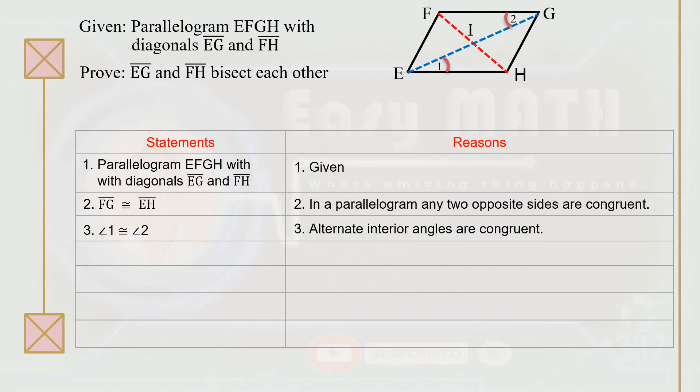Statement number four: angle FIG is congruent to angle HIE. The reason is the vertical angle theorem.